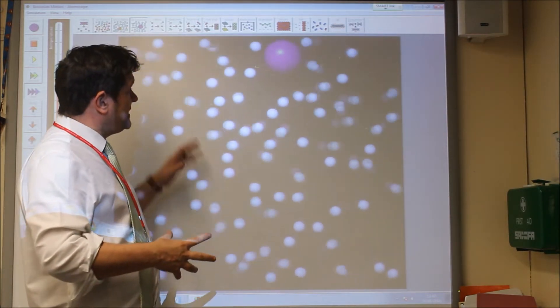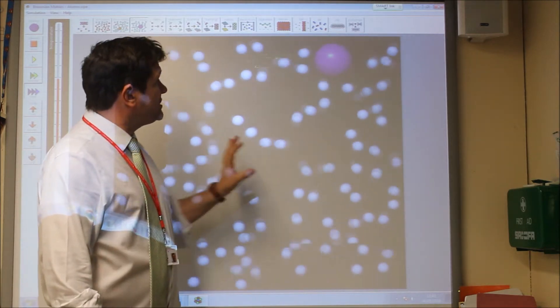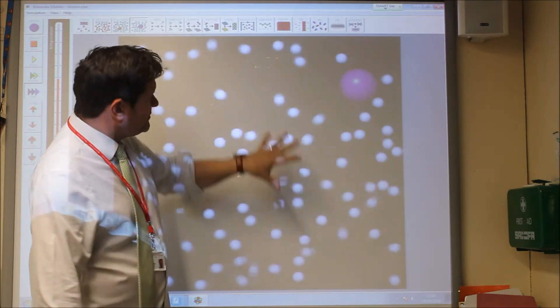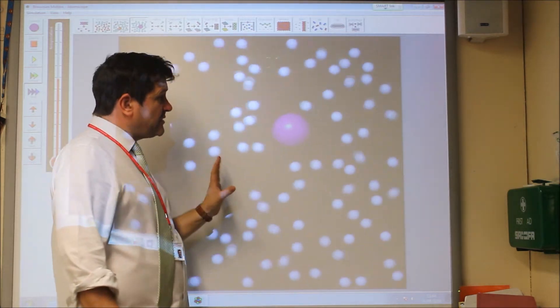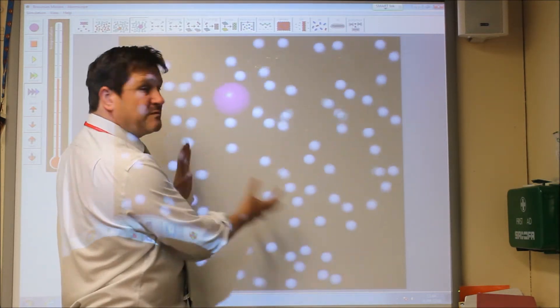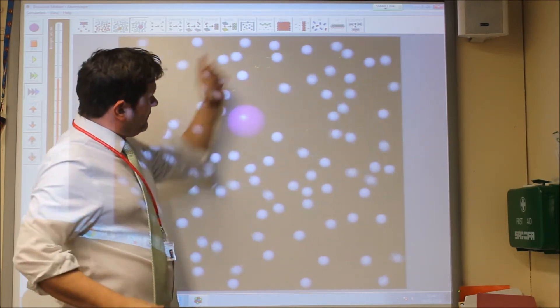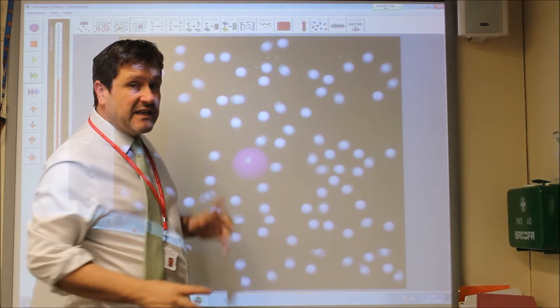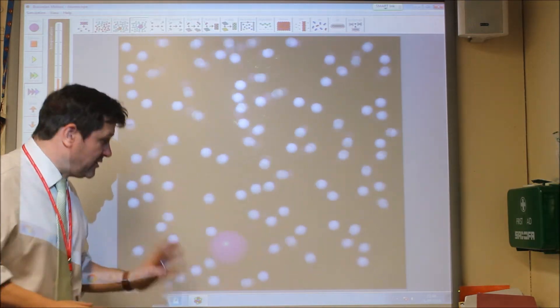And scientists were able to determine that this is how particles must be moving in order to create this random motion of the smoke particle or the pollen grain. So this showed us what must be happening, what must be colliding with it, in order to create that motion. So the atoms which couldn't be seen, their motion was determined by looking at something which could be seen under a microscope.